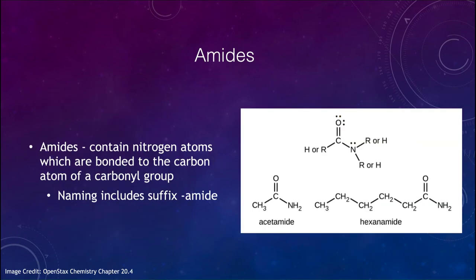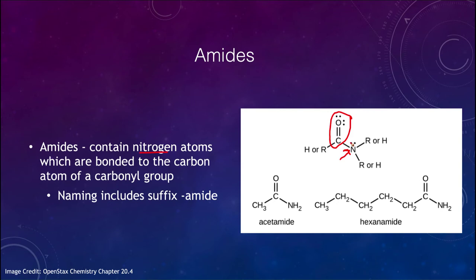The next one we wanted to look at were the amides. Amides contain nitrogen groups which are bonded to carbon atoms. We have a carbonyl group here — the C=O, carbon bonded to oxygen — and we have a nitrogen bonded to them instead of a carbon. Nitrogen can bond three times; it has its two electrons and one bond to a carbon, so it has two open bonds. One can go to another carbon group or a hydrogen atom.